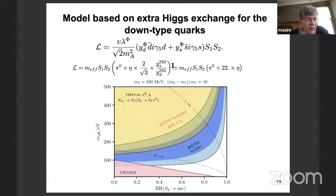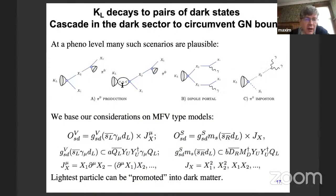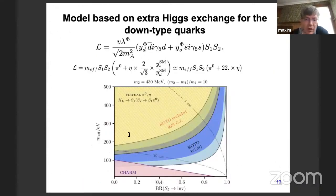Here is another example of a dark sector model where two scalars, S1 and S2, couple to pseudoscalar density of down quark and s quark. From the low energy point of view, this is a dimension five operator. This is a very minimal model pictured here. Then the K_long, due to the normal weak amplitude, can go to pi eta eta prime. That decays into X2, X1, and X2 decays to X1 and pi zero. So this is a very economical model. Indeed, KOTO provides fairly strong sensitivity to that model, complementing the existing beam dump constraints.